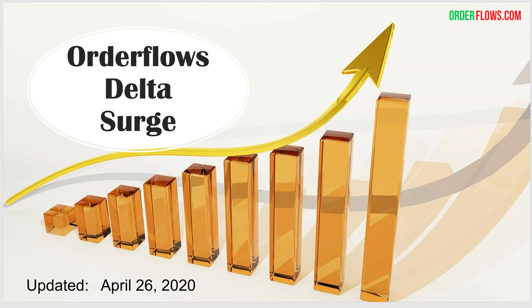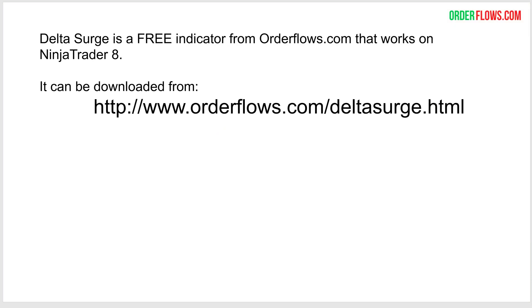Hey everyone, it's Mike from OrderFlows, and welcome to this second video on the OrderFlows Delta Surge. The Delta Surge is a free indicator that we give away on our website, OrderFlows.com, and it works on NinjaTrader 8. It doesn't work on TOS or TradeStation. It can be downloaded by going to OrderFlows.com/DeltaSurge.html. At the bottom of the page, you will have to enter your name and email address to get access to the download.